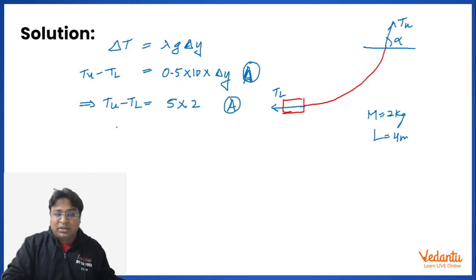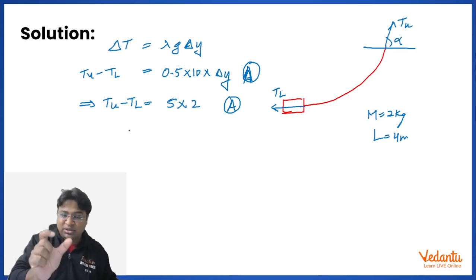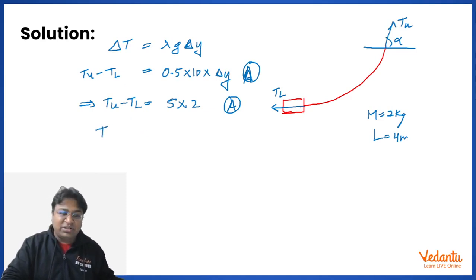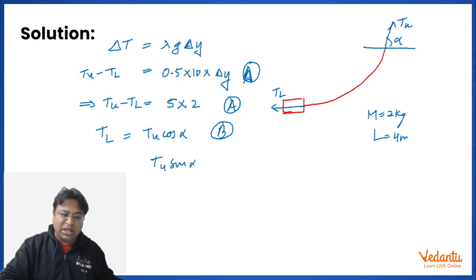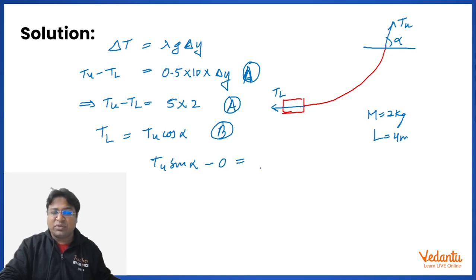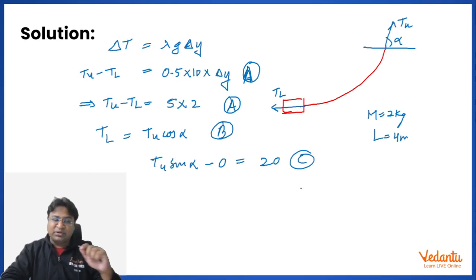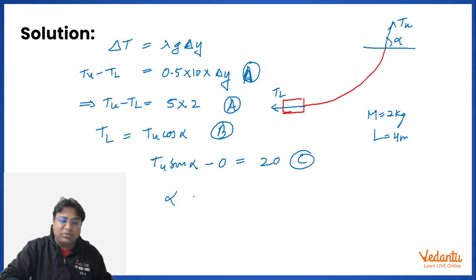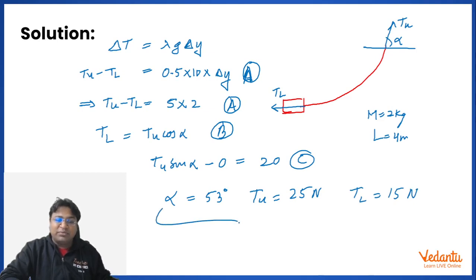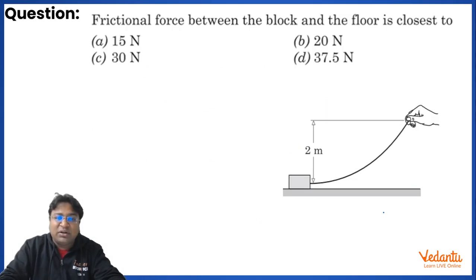Equation B: T_L = T_U·cosα (horizontal tension constant). Equation C: T_U·sinα = Mg = 20 N (vertical equilibrium with block weight). We now have three equations with three unknowns: T_U, T_L, and α. Solving them gives α = 53°, T_upper = 25 N, and T_lower = 15 N.